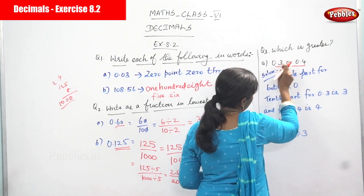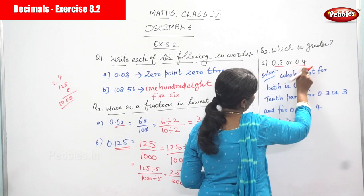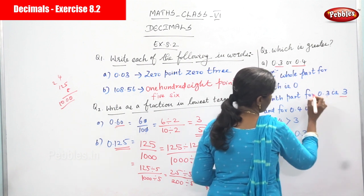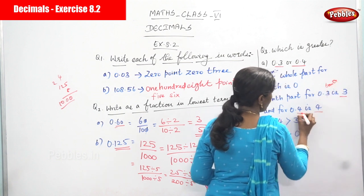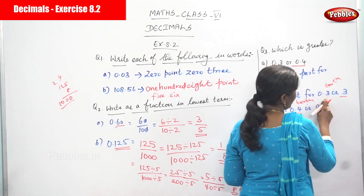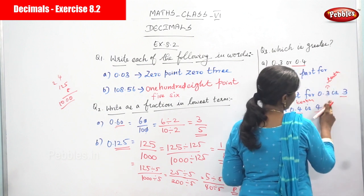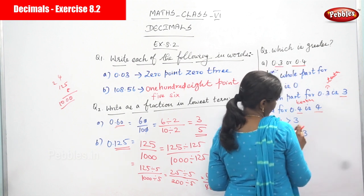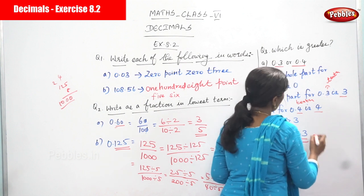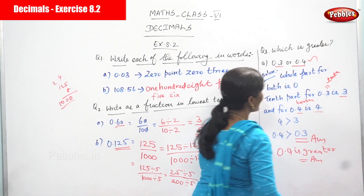Now look at the tenths part. After the point, 0.3 has digit 3 — so the tenths part for 0.3 is 3. And for 0.4, the tenths part is 4. Since 4 is greater than 3, therefore 0.4 is greater than 0.3. So 0.4 is the answer. I think you understand the concept.